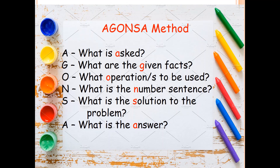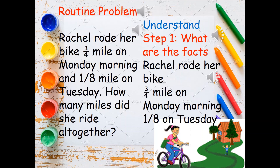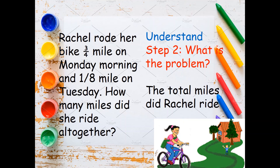Let's try to answer this problem. Raysha rode her bike 3/4 mile on Monday morning and 1/8 mile on Tuesday. How many miles did she ride altogether? The given facts are that Raysha rode her bike 3/4 mile on Monday morning and 1/8 mile on Tuesday. The problem asks for the total miles that Raysha rode.